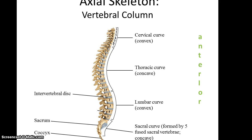When you look at the vertebral column, you see that it actually has some naturally occurring curves. The cervical curve is sort of convex, while the thoracic curve is somewhat concave. The lumbar curve is somewhat convex, and then the sacrum and coccyx form the sacral curve, which is somewhat concave. The sacrum and coccyx are bones that were originally separate vertebrae — for instance, the sacrum is formed by five fused vertebrae.